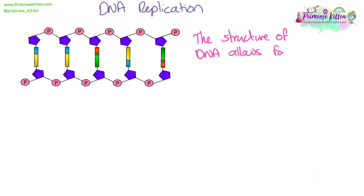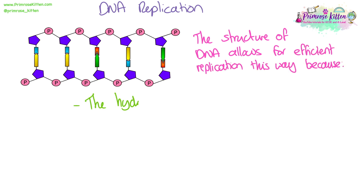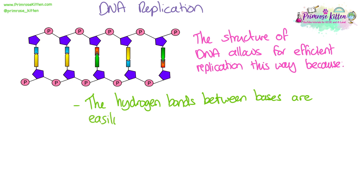We need to explain how the structure of DNA allows for efficient replication in this way. Firstly, there are hydrogen bonds that hold the bases together. These bonds are relatively weak, and importantly they can be easily broken so that the two strands can split apart in order for us to be able to copy them.